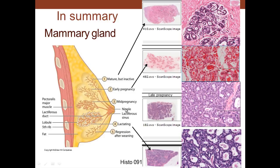In mid-pregnancy and late pregnancy there is further development of the glands, and some milk may be present in the lumens. In the lactating mammary gland, milk is clearly present in the lumen. These are the different phases as described: mature non-active, early pregnancy, late pregnancy, and finally lactation. After lactation, the mammary gland regresses and returns to its original inactive state.